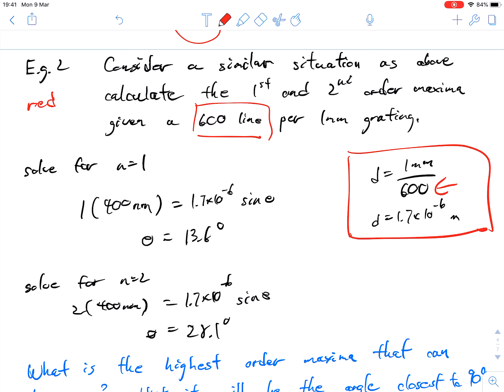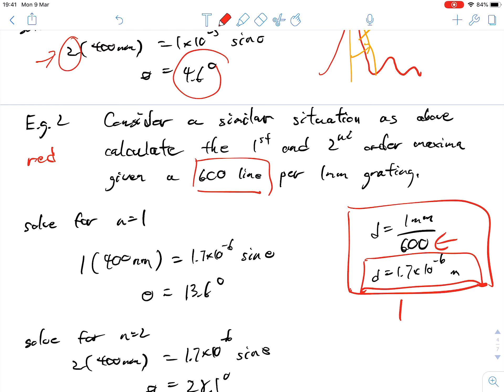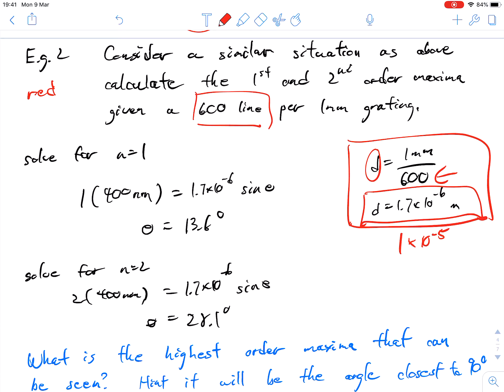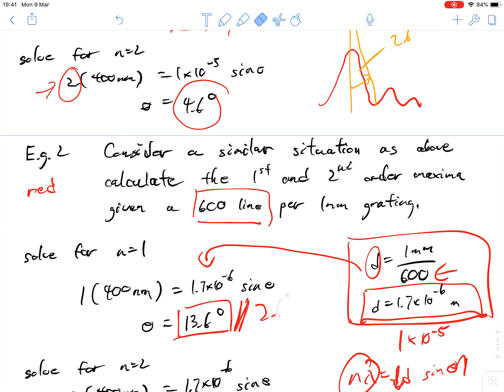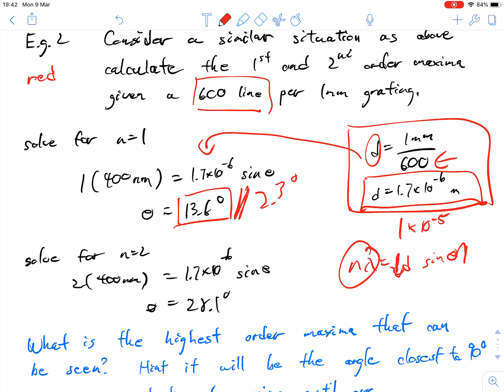So increasing d is going to decrease this value. Before it was 1 times 10 to the power of negative 5, and now we're down to the negative 6. So we're seeing number of lines increasing, d decreasing as a result of that. This makes sense when you look at the basic fundamental formula: n lambda equals d sine theta. As d goes down, and if both of these are kept constant, then sine theta has to increase to compensate for that. I need to get some water.